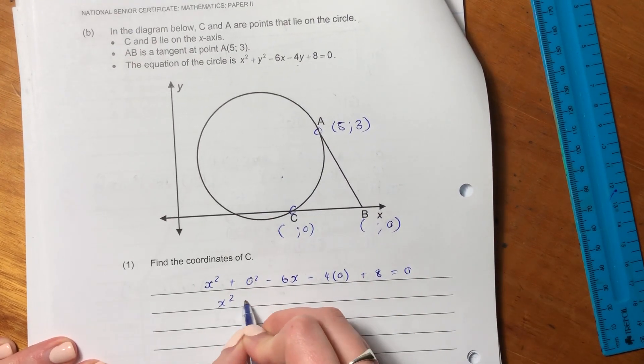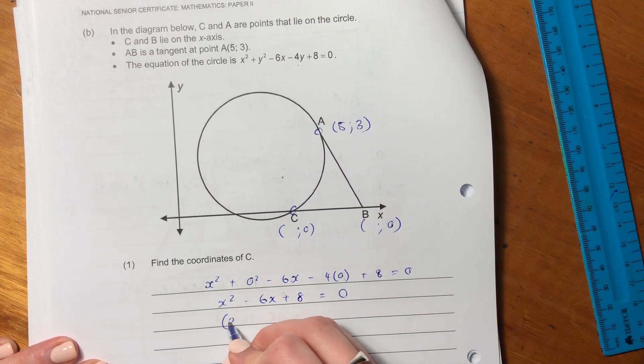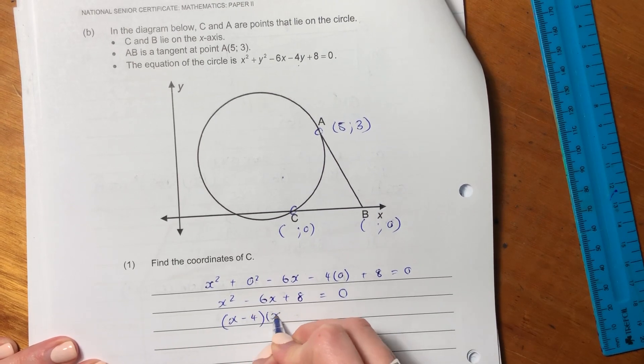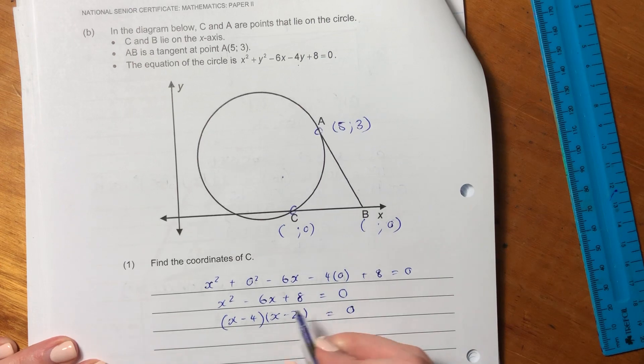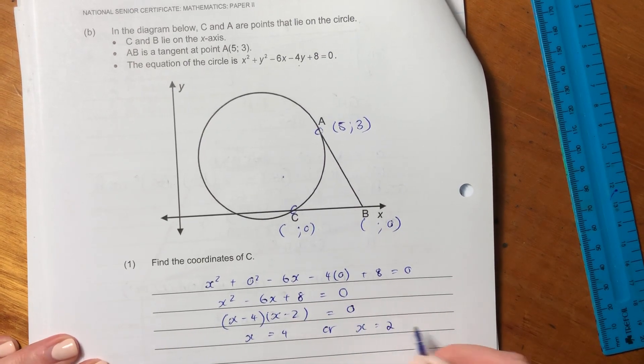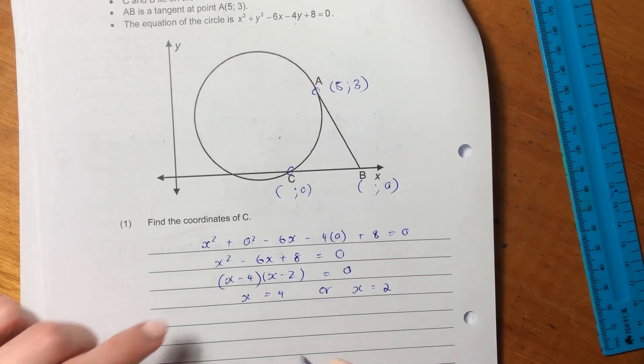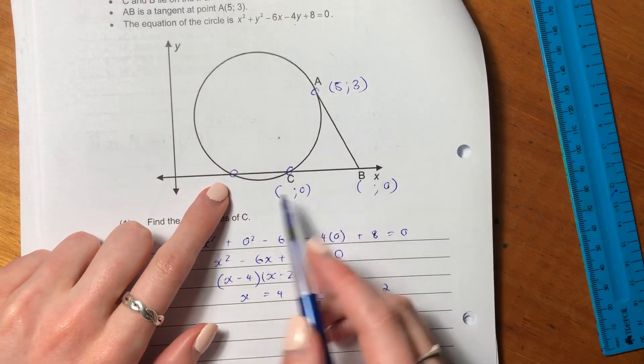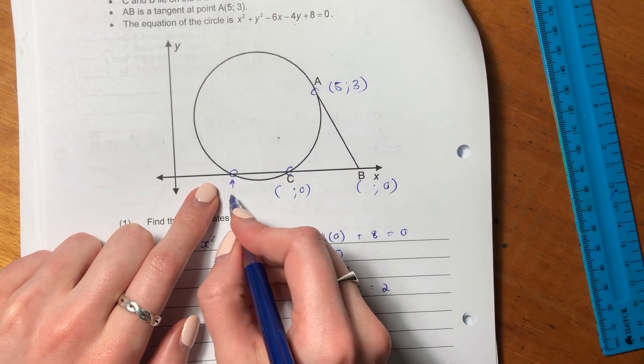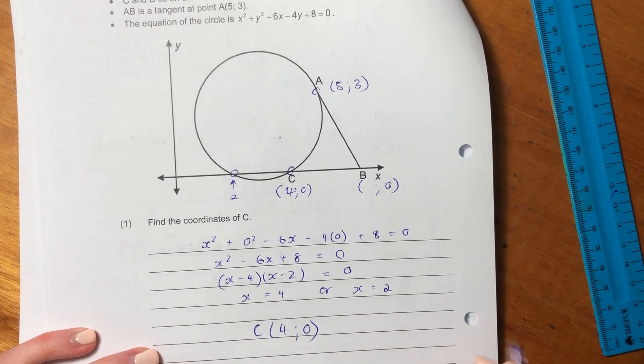So we get x squared minus 6x plus 8. So now we can just factorize. So it's x minus 4, x minus 2. So we know that x equals 4, or x equals 2. So now we need to be a little bit critical as to what is the value of C. We know that there are two intersections here. There's one over there and one over there. So this is going to be the 2, and this is going to be the 4.